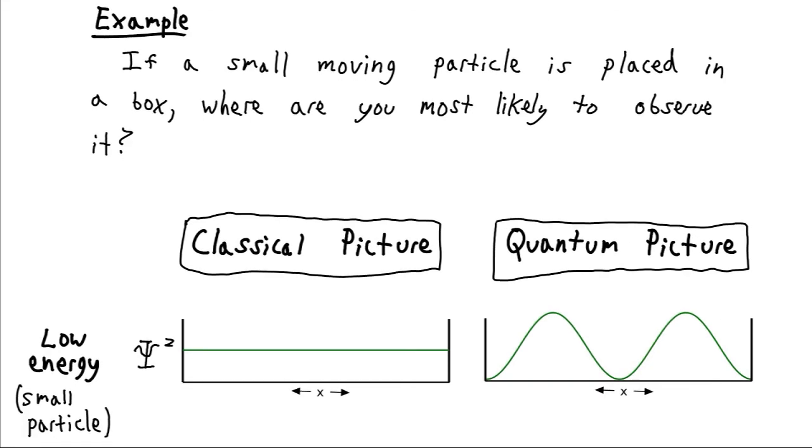Now according to the quantum picture, as we saw, if we square that wave function, we get, you know, maybe a couple of peaks. And so we might find our electron here. We might find it here. We would never find it here, here, or here.